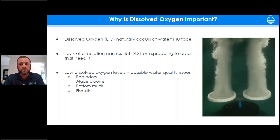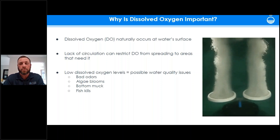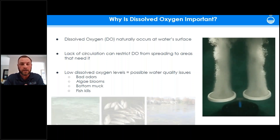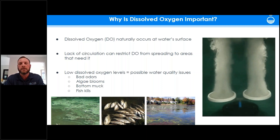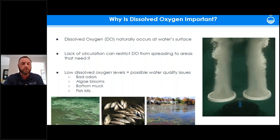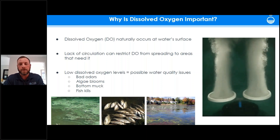Why is dissolved oxygen — or DO — so important? Dissolved oxygen naturally occurs at the water's surface, but poor circulation can prevent it from reaching areas where it's needed, causing anaerobic conditions. When DO levels are low, it can lead to bad odors like a rotten egg smell, algae blooms — including potentially toxic blue-green algae or cyanobacteria — muck buildup, and potentially fish kills.